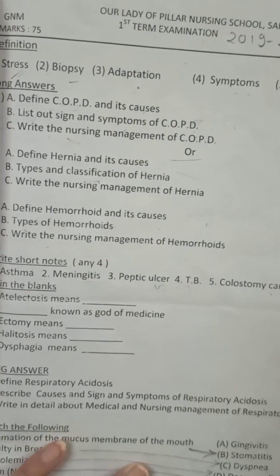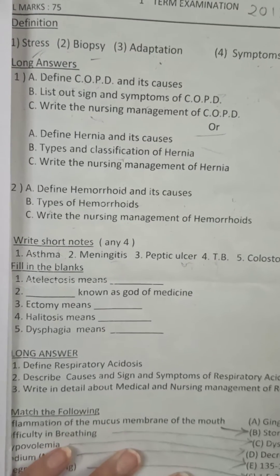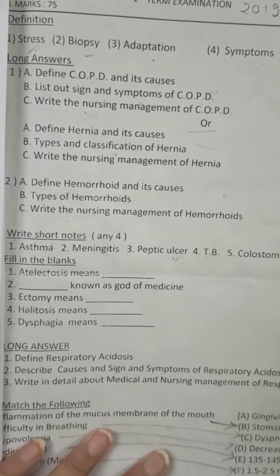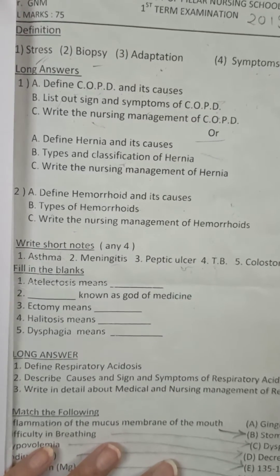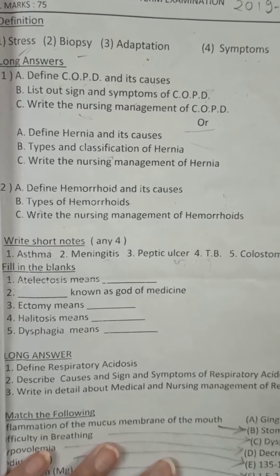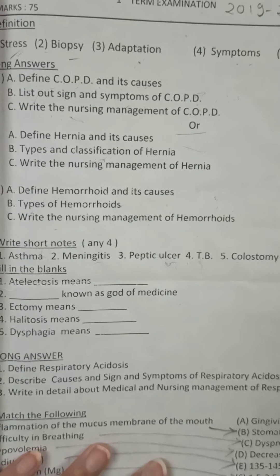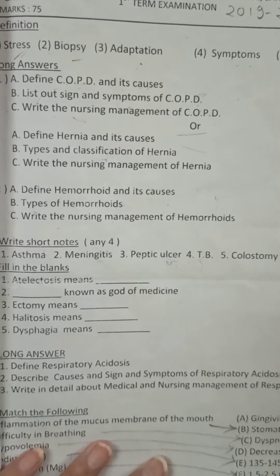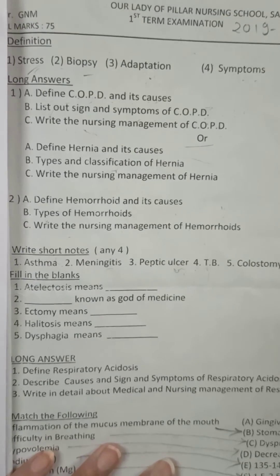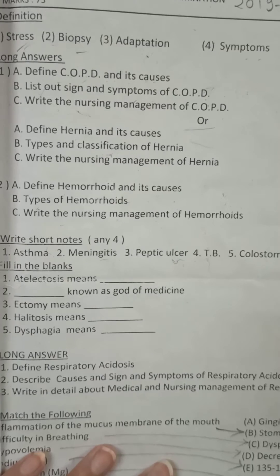Next section: short notes, each for four marks. First short note: asthma — from the respiratory system. Second: meningitis. 'Itis' means inflammation, so meningitis is infection or inflammation occurring in the meningeal layer.